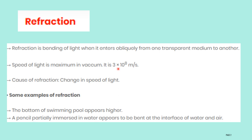Why does refraction happen? Because of the change in speed of light. When light travels from one medium to another medium, there will be a change in speed of light. Speed of light in air is different; speed of light in water is different. Therefore, there will be a change in speed of light in different media, and because of this change, refraction will occur.